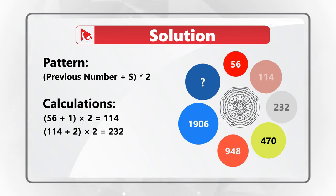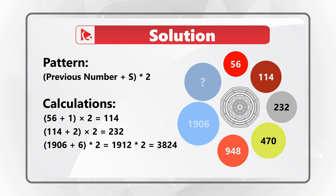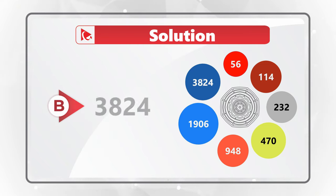So our final number: 1906 plus 6 (which is the sequence number), multiplied by 2, equals 1912 multiplied by 2, which equals 3824.